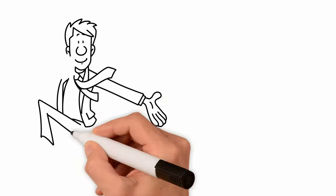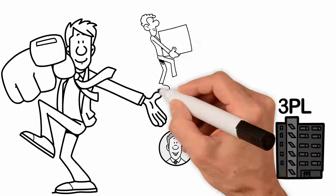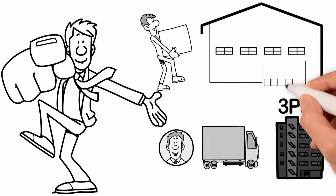It all starts when you, the seller, ship your cargo directly to a 3PL. That warehouse receives the shipment and inventories your product in their system.